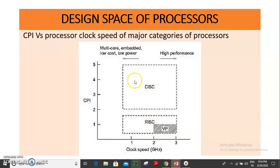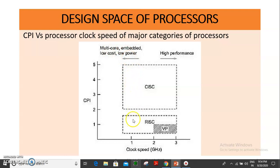In CISC and RISC, there are two processor categories. There are Multicore Processors, Embedded Application processors, Low Cost Processors, and Low Power Processors. These types of processors are available in both CISC and RISC.